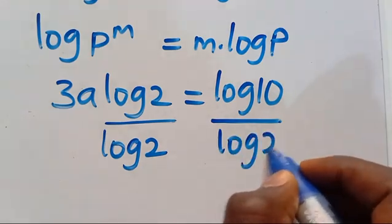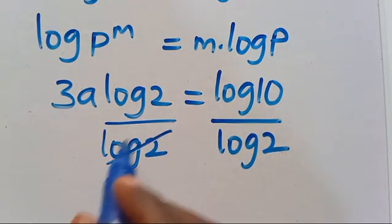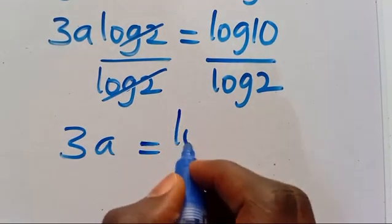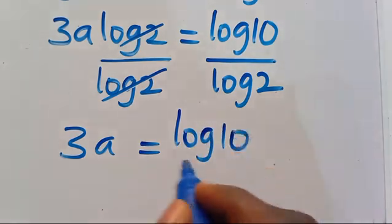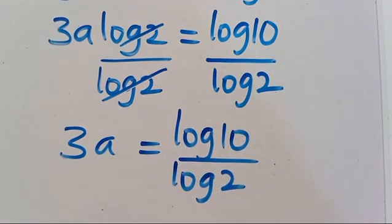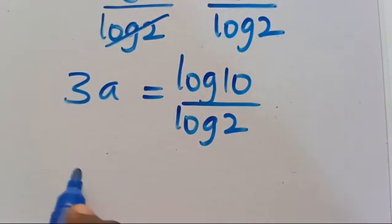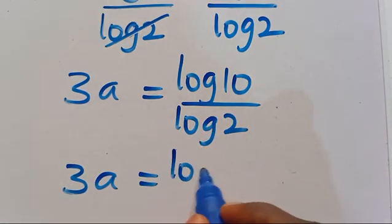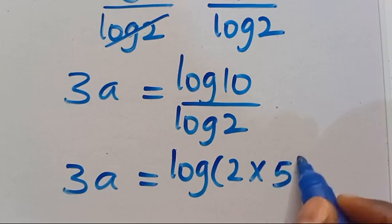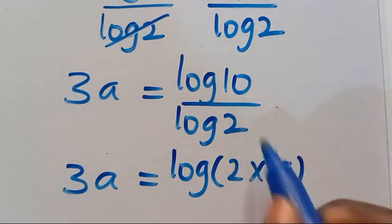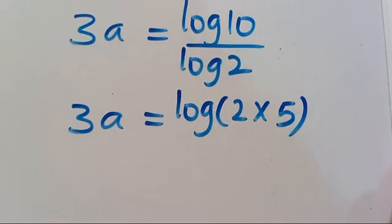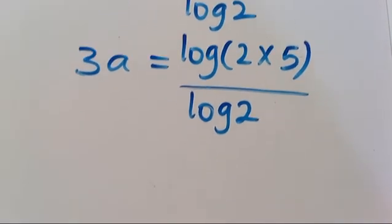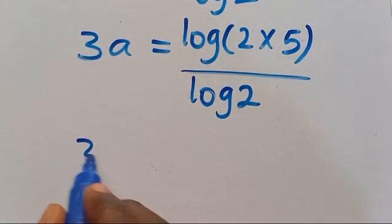We divide both sides by log 2, so this cancels and we have 1 multiplied by 3a equals log 10 divided by log 2. Now, log 10 can be simplified because 10 is the product of 2 multiplied by 5, so log 10 equals log(2 times 5), all divided by log 2.